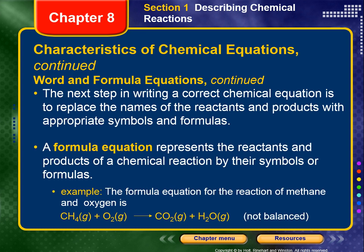The next step is to replace the names of the reactants and products with the appropriate symbols and formulas. This leads us to a formula equation. A formula equation represents the reactants and products of a chemical reaction by their symbols and formulas. For example, the formula equation for the reaction of methane and oxygen is: CH₄(g) + O₂(g) → CO₂(g) + H₂O(g). Note that oxygen is a diatomic molecule — if you simply write O, it will be incorrect; it is O₂. But even though we have the formulas, we have not balanced this equation yet.